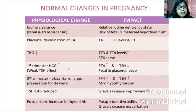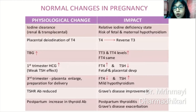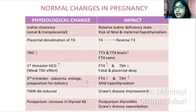In the first trimester, HCG increases — the alpha subunit cross-reacts with TSH receptors — so there is an increase in free T4 and a consequent decrease in TSH. In the third trimester, the placenta enlarges and therefore there is increased deiodination of T4 to T3, so T4 levels decrease and TSH levels rise, resulting in a relatively mild hypothyroidism towards the third trimester.